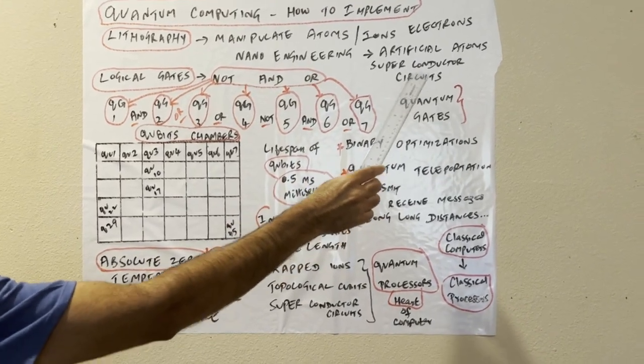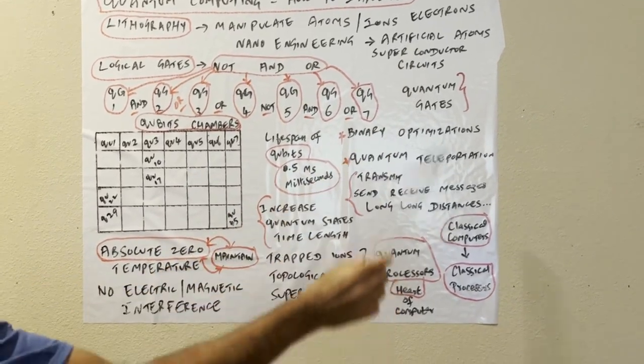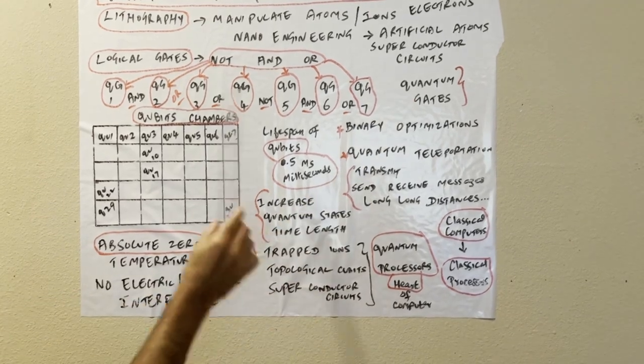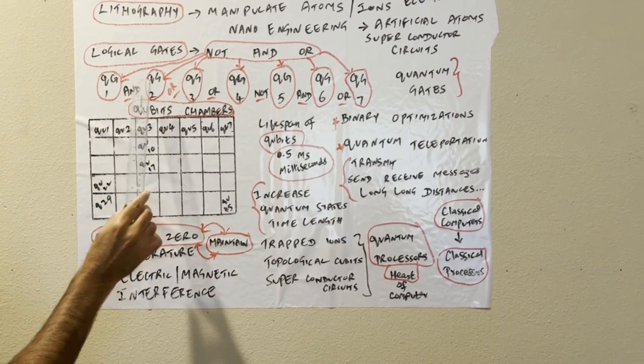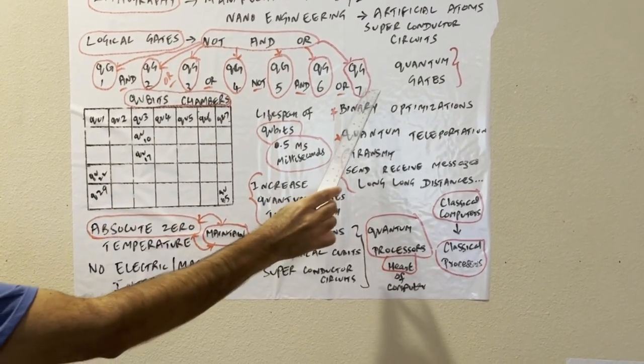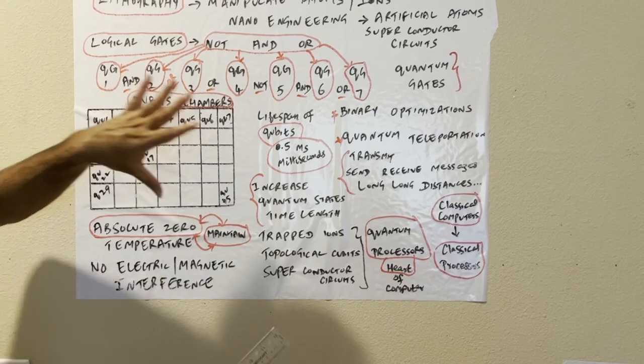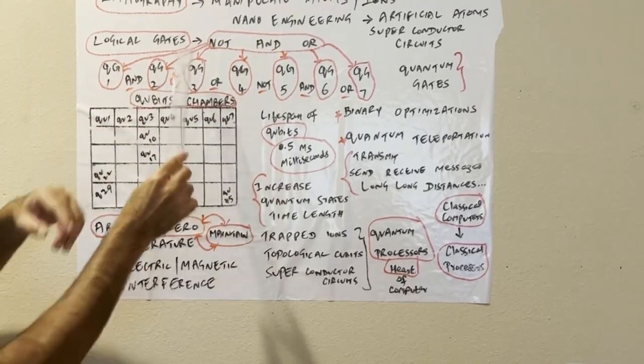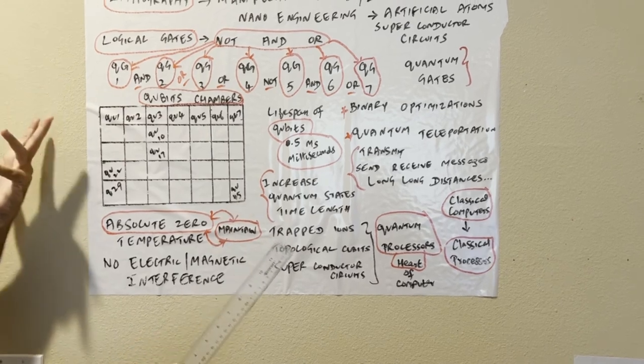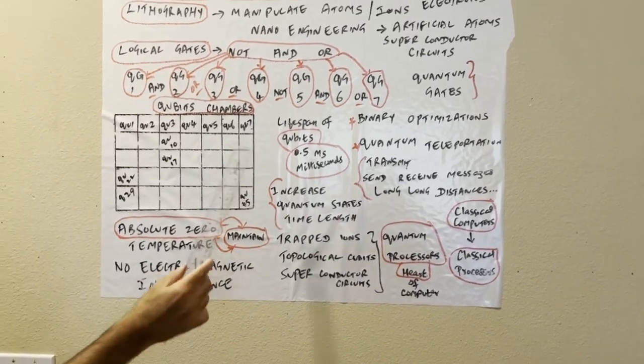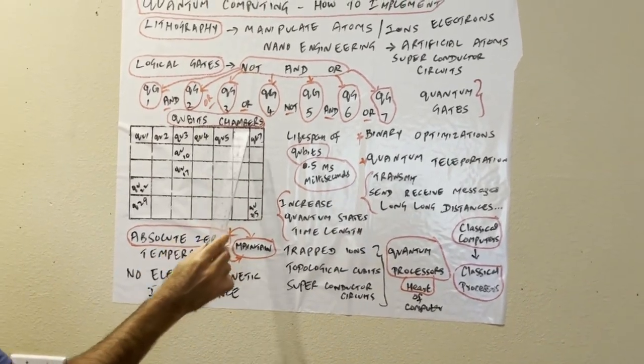So what are the logical gates? Not, and, or, quantum gate 1, quantum gate 2, quantum gate 7. These are like different gates interlinked by the logical gates not, and, or. This is like a brief intro but I don't know how it's implemented. So they have like qubits chambers.